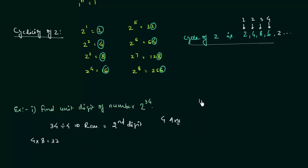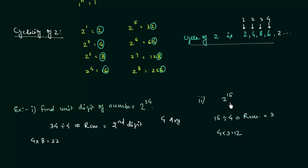Example 2: find the unit digit of 2 raised to power 15. Again we divide 15 by 4, which gives a remainder of 3, because 4 times 3 is 12 and 15 minus 12 is 3. A remainder of 3 means the third digit of the cycle, which is 8. So 2 raised to power 15 has 8 at the units place.